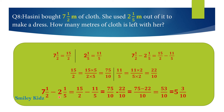So 7 and 1 by 2 minus 2 and 1 by 5 equals 75 by 10 minus 22 by 10 equals 53 by 10, which equals 5 and 3 by 10.